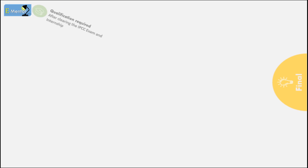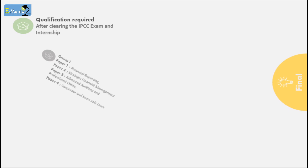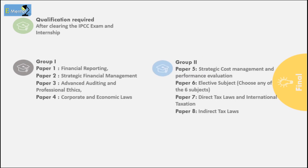As soon as you clear Group 1, you can start your articleship. Articleship means you have to complete 3 years of practical training under a CA. During this period, you can also give your second group exam. Students who gave IPCC after graduation get a 9-month exemption. For the Final level, after clearing both groups of IPCC and in the last 6 months of articleship, you can apply for the Final exam. This level also has two groups with 4 papers each, and you can give both groups together or separately.